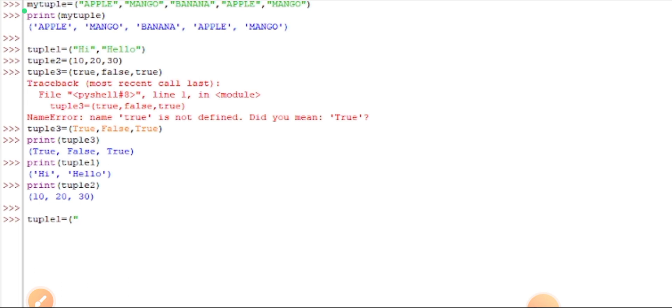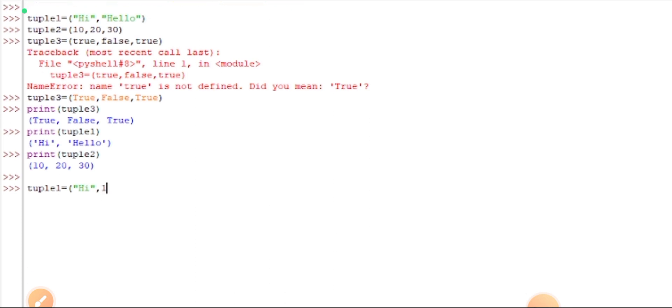Next one: combining all these three data types in a single tuple. Let us see. Tuple1 is equal to hi, 10, true, 20. I want to print this one: print tuple1.